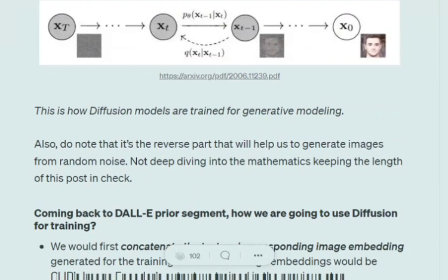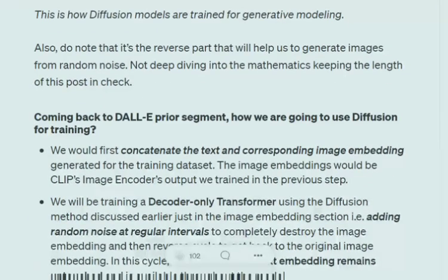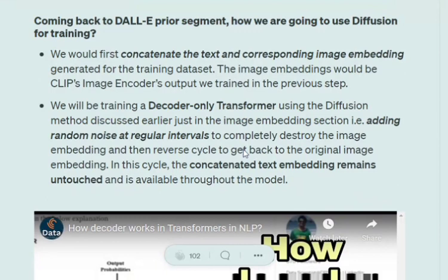The reverse cycle — where we reduce noise step by step — is used for generative modeling. We feed random noise and the model outputs a good image from the distribution it was trained on. Coming back to the DALL-E prior segment: to train it, we take the text embedding and the corresponding image embedding (from CLIP's image encoder). These are concatenated together.